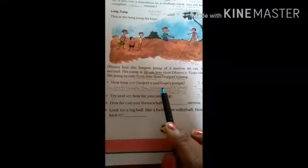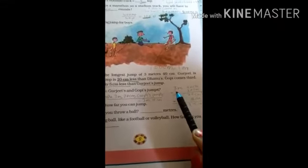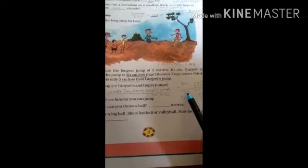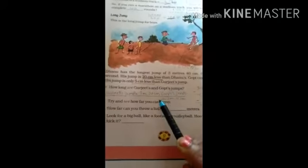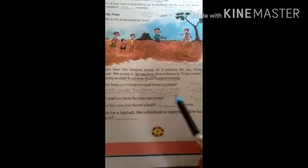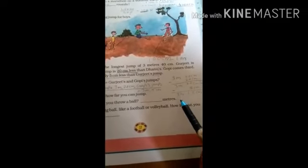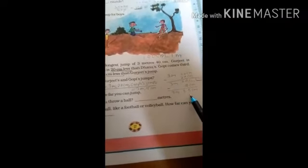The first question is: how long are Gurjit's and Gopi's jumps? To find Gurjit's jump, we subtract 20 cm from 3 meters 40 cm, giving us 3 meters 20 cm. For Gopi's jump, we subtract 5 cm from Gurjit's jump of 3 meters 20 cm, giving us 3 meters 15 cm.